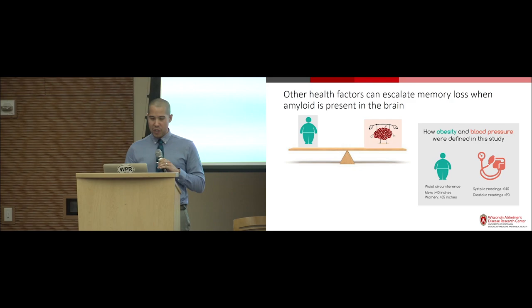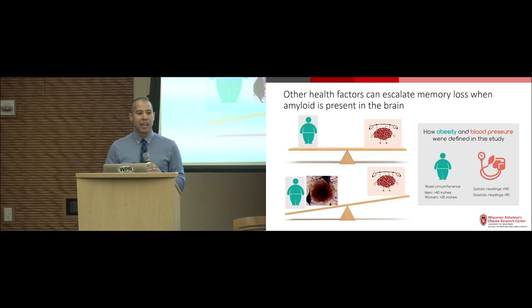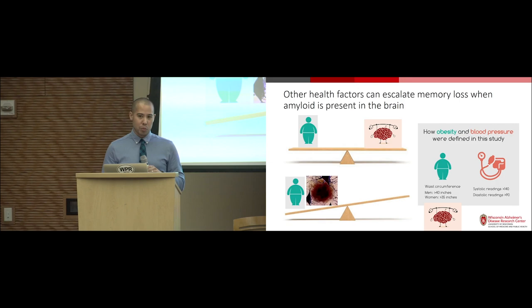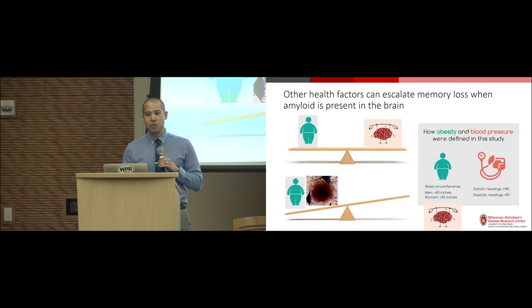Compared to people without any of these factors, high blood pressure did not worsen cognitive performance, and the same was true for obesity. However, when you have obesity and a high level of amyloid in your brain, that tipped the scales. There was a synergistic effect of having amyloid and one of those factors, and it led to faster decline in cognitive performance. The same is true for blood pressure but not for depression and high amyloid levels. This is important since we can actually treat obesity and high blood pressure, but we need to identify the right people to study and treat.